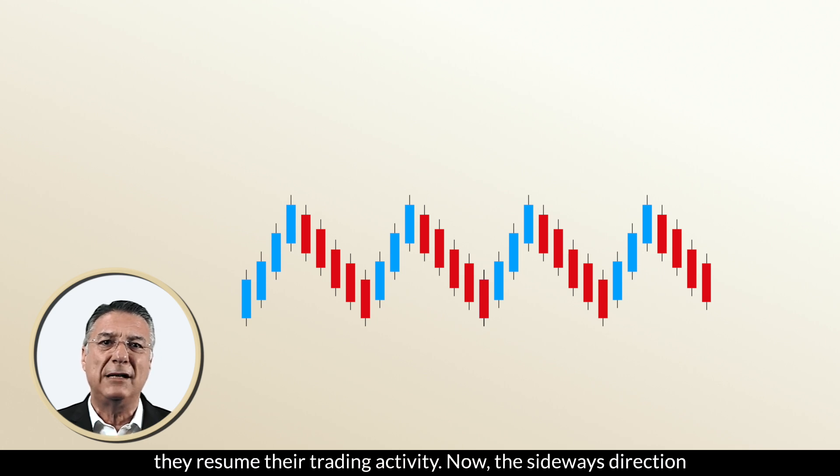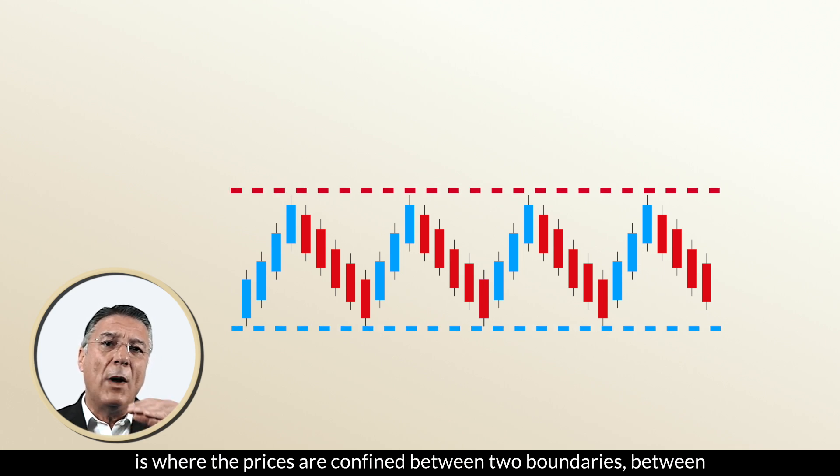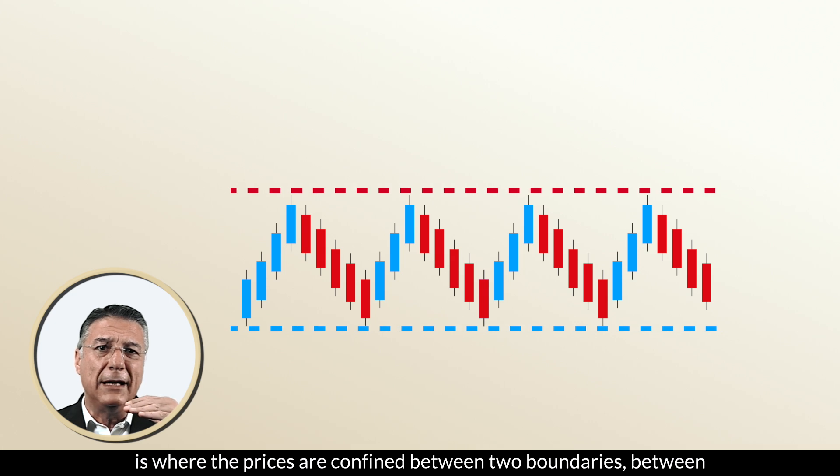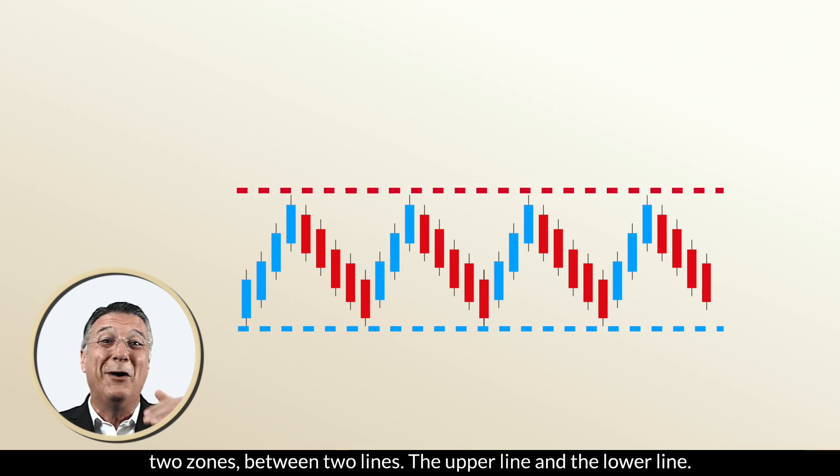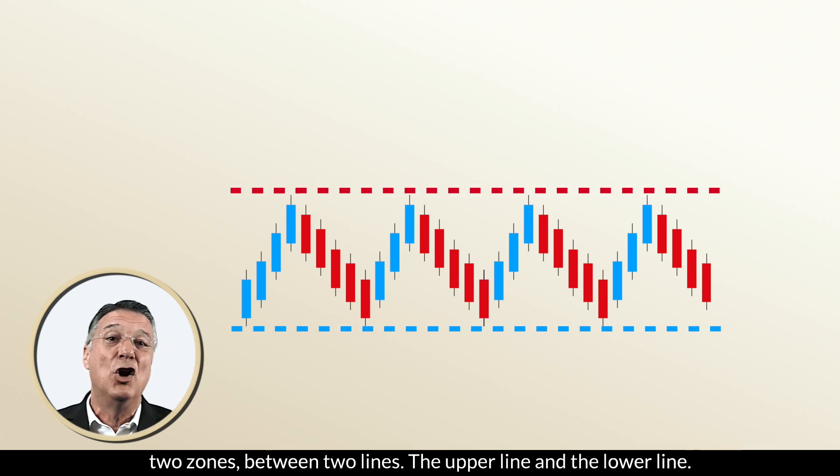Now, the sideways direction is where the prices are confined between two boundaries, between two zones, between two lines: the upper line and the lower line.